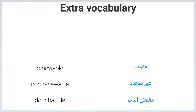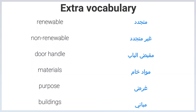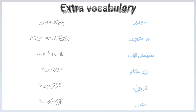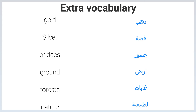Extra vocabulary: Renewable. Non-renewable. Door handle. Materials. Purpose. Buildings. Gold. Silver. Bridges. Ground. Forests.